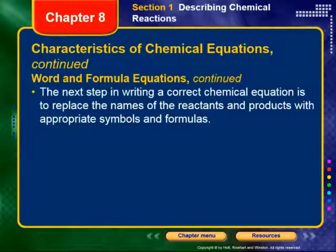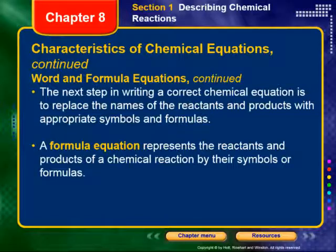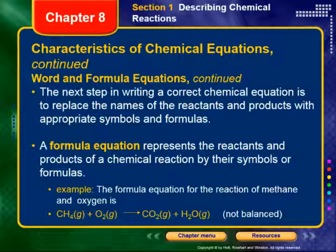The next step is to replace the names of the reactants and products with the appropriate symbols and formulas, giving us a formula equation. For the methane combustion example, we replace methane with CH₄, oxygen with O₂ — remembering it's a diatomic molecule — carbon dioxide with CO₂, and water with H₂O. This equation is not yet balanced; I have not yet satisfied the law of conservation of mass. This is just step two: representing each chemical with its correct formula.